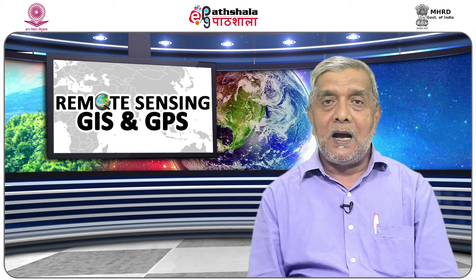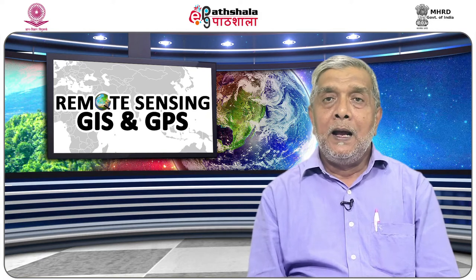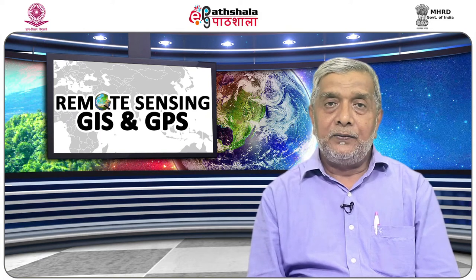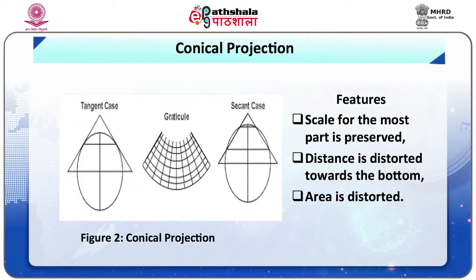The parallels are arcs of circles drawn using the vertex as the center, and the meridians are straight lines radiating from the vertex at equal angles. Figure 2 shows the positions of the conical projections. The important features are that scale is for the most part preserved, distance is distorted towards the bottom, and area is distorted.